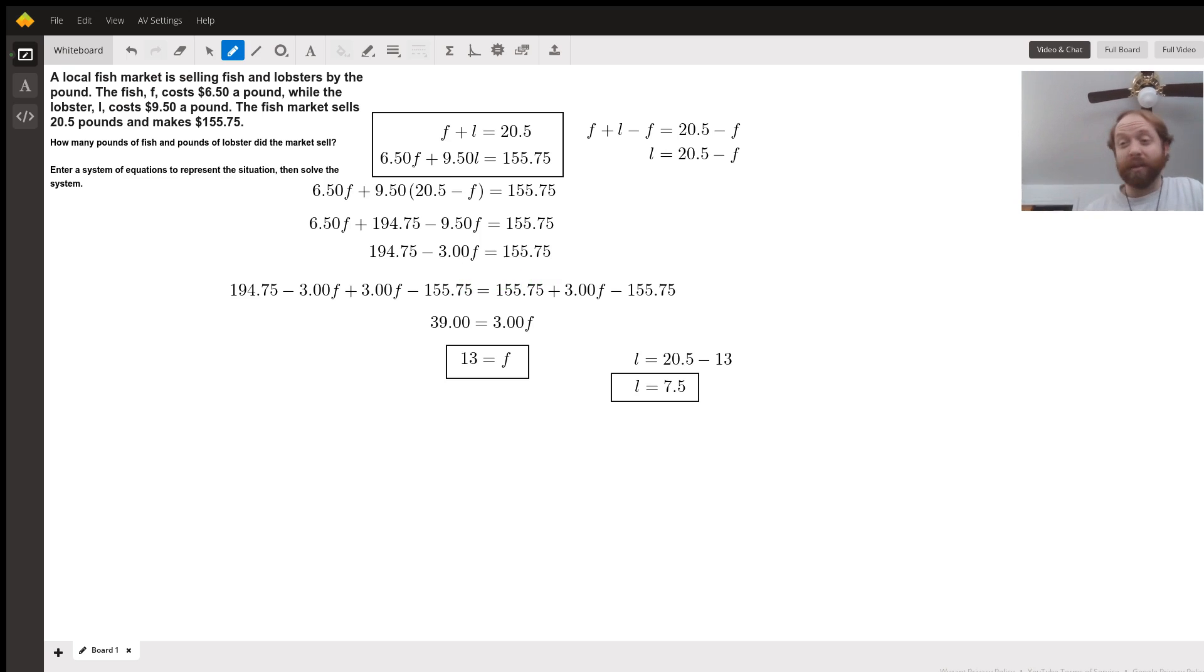I don't like dealing with the negatives on there, so we're going to go ahead and just switch the sides on this. Basically, we're going to add $3.00 times F to both sides. We're also at the same time going to go ahead and subtract $155.75 from both sides.